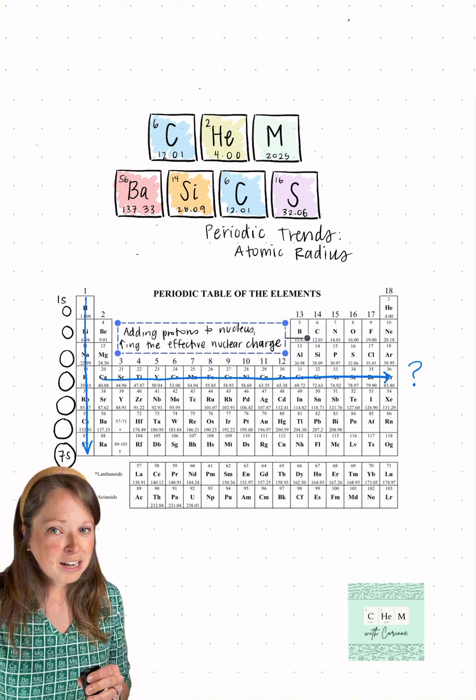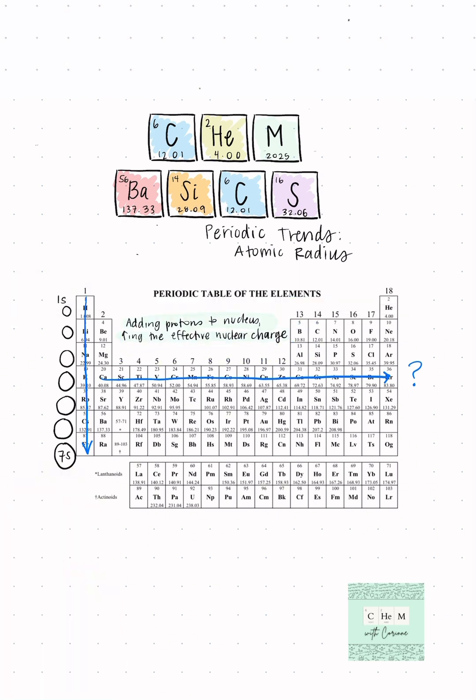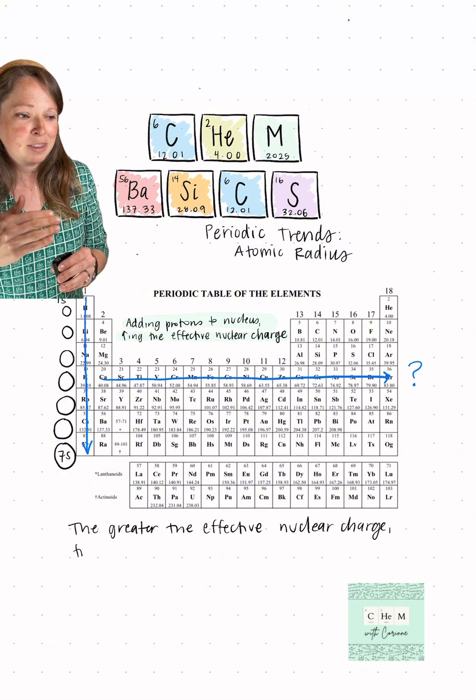This means that the electrons are going to be pulled inwardly towards that nucleus. So as I move across a period, I am actually shrinking the size of the radius. So let's back that up.